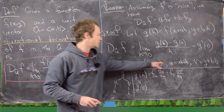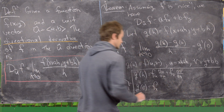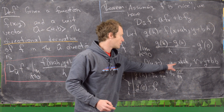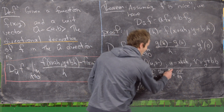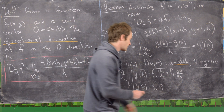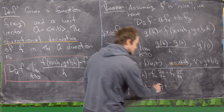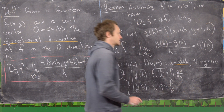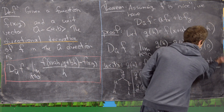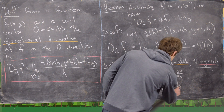Evaluating at h equals zero: u equals x, so we get the partial derivative with respect to x, and du/dh is just a. Similarly, v equals y, so we get the partial derivative with respect to y, and dv/dh is exactly b. So g prime at zero equals a·f_x plus b·f_y.